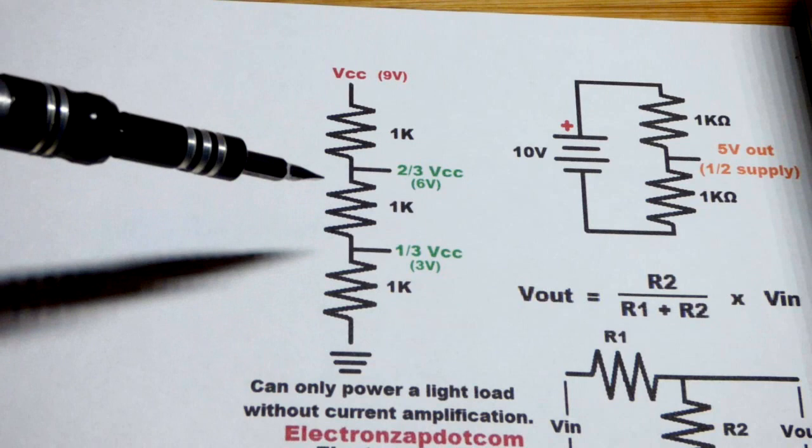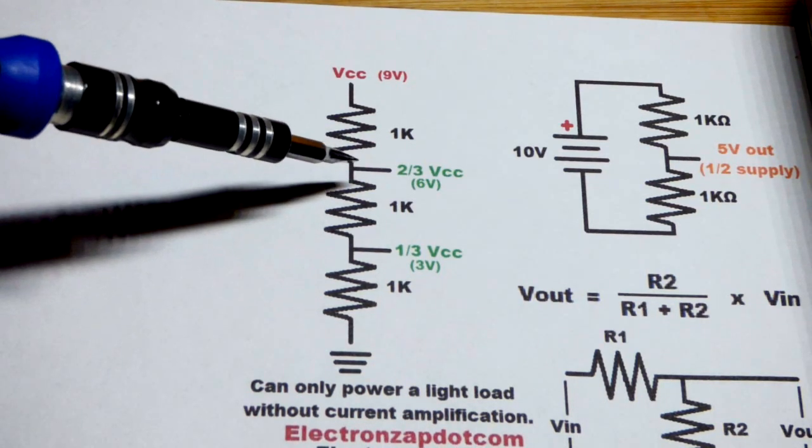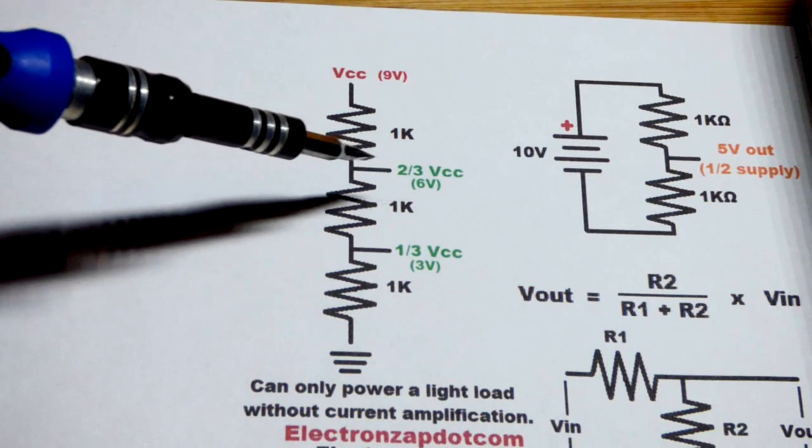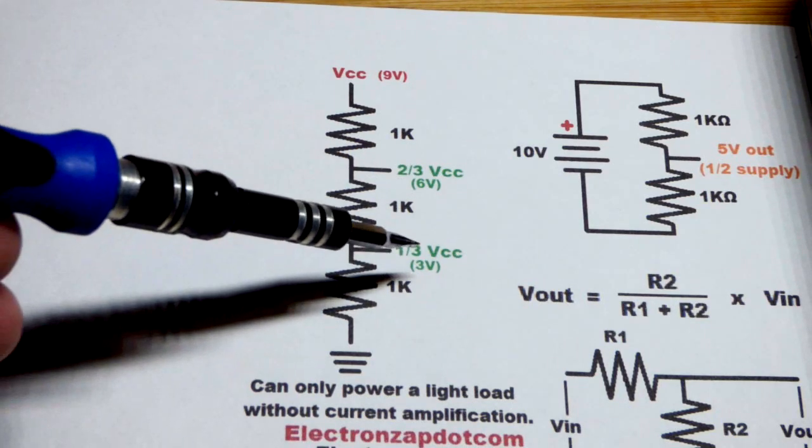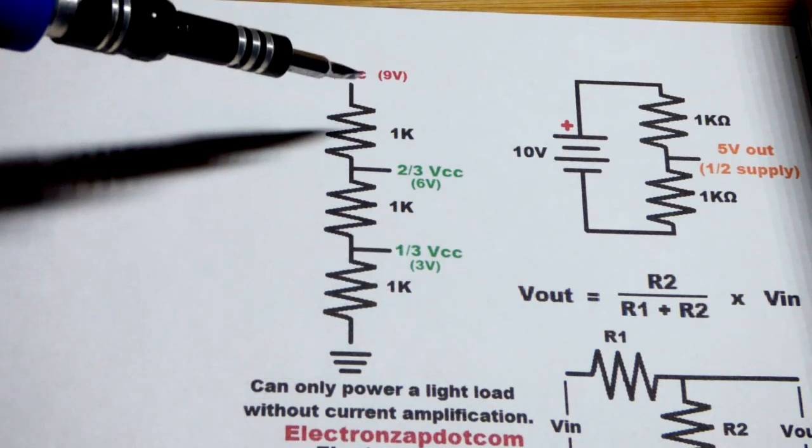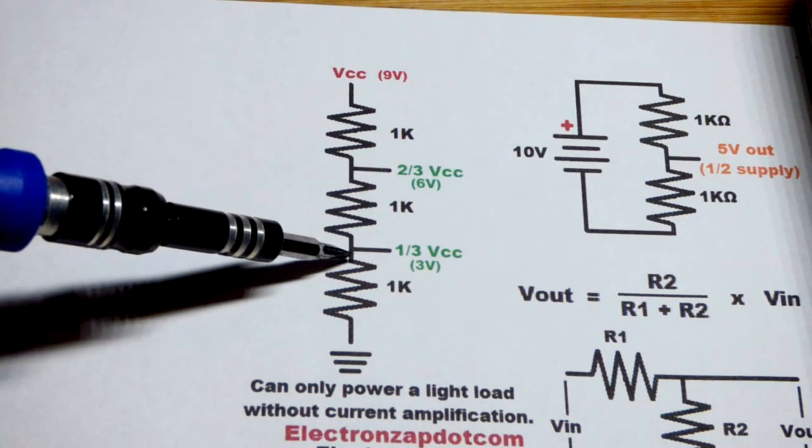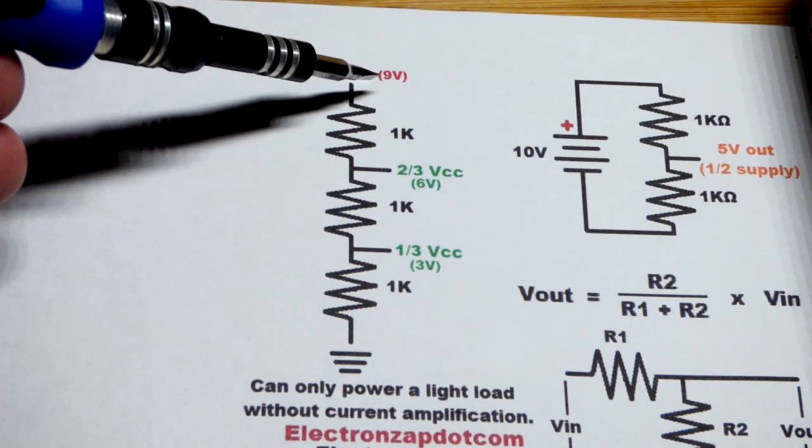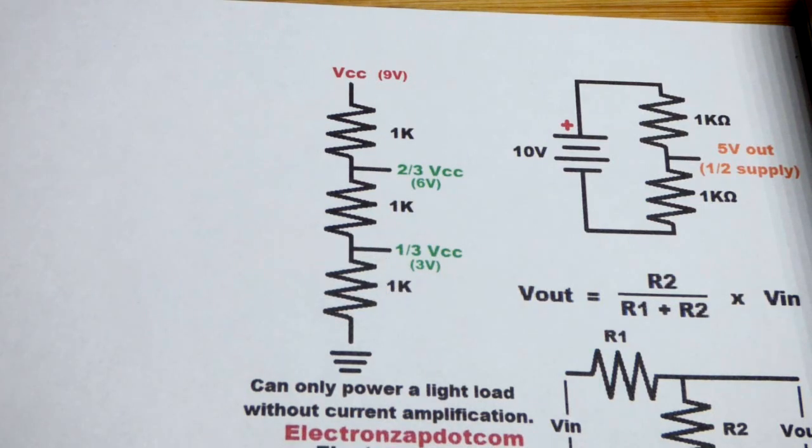One of the voltages the 555 timer looks at is the two-thirds supply voltage, and the other is the one-third supply voltage. It doesn't matter what the voltage is, you'll get two-thirds or one-third. If it's nine volts, the math is easy: two-thirds is six volts and one-third is three volts.